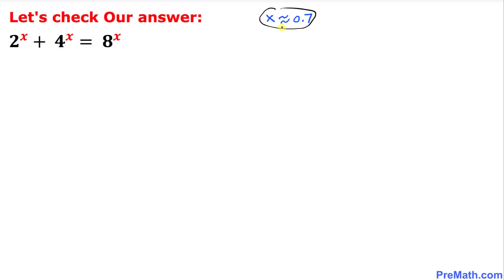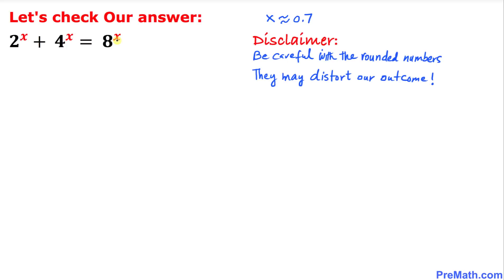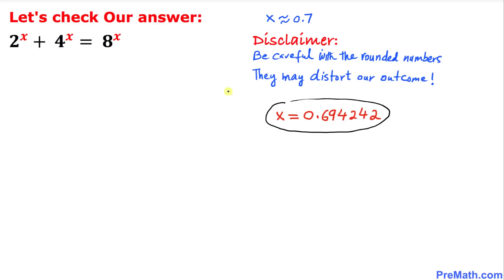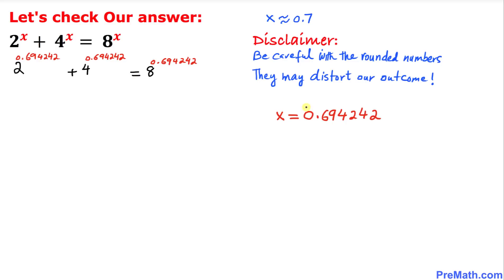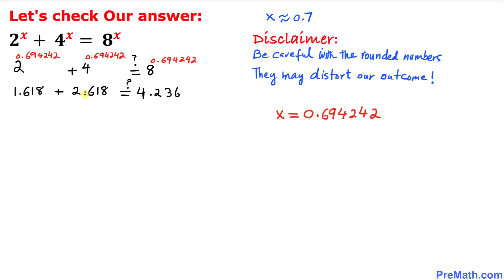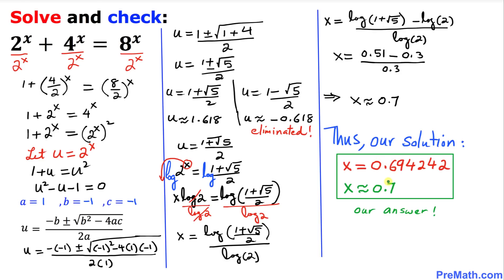Here's our final step — let's check our answer. We got x is approximately equal to 0.7, so wherever we see x we are going to replace it by that value. We have to be very careful with rounded numbers as they may distort our outcome, so we are going to replace x by the exact quantity. Checking whether the left hand side equals the right hand side using a calculator, we got 1.618 plus 2.618, and the question is whether it equals 4.236 — and we can see that the left hand side does equal the right hand side. So we have checked our answer, and thus x approximately equals 0.7. Thanks for watching and please don't forget to subscribe to my channel for more exciting videos!